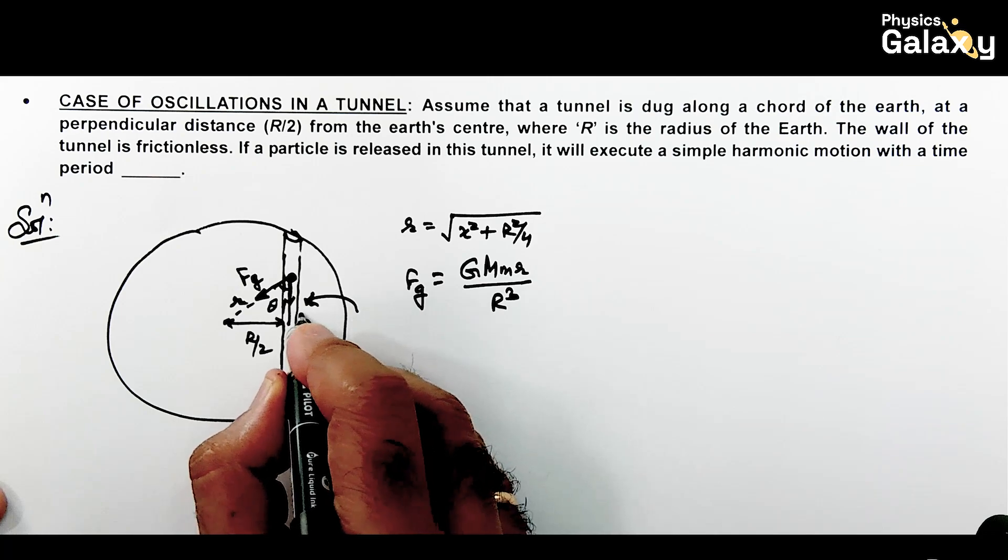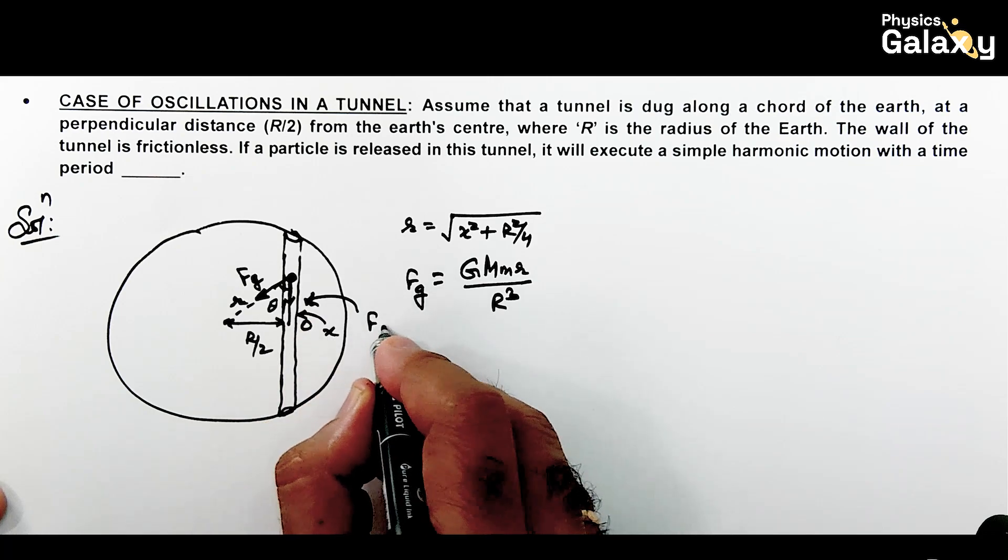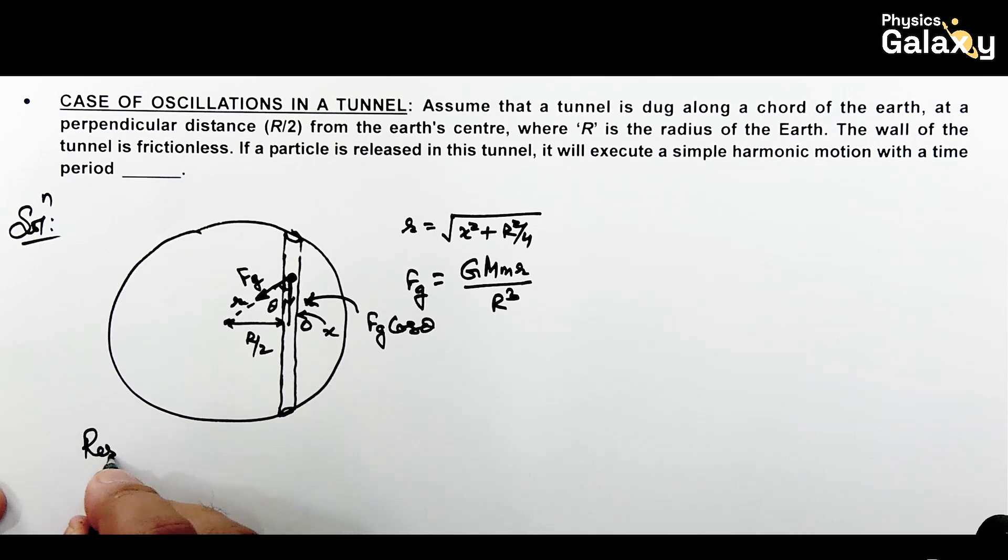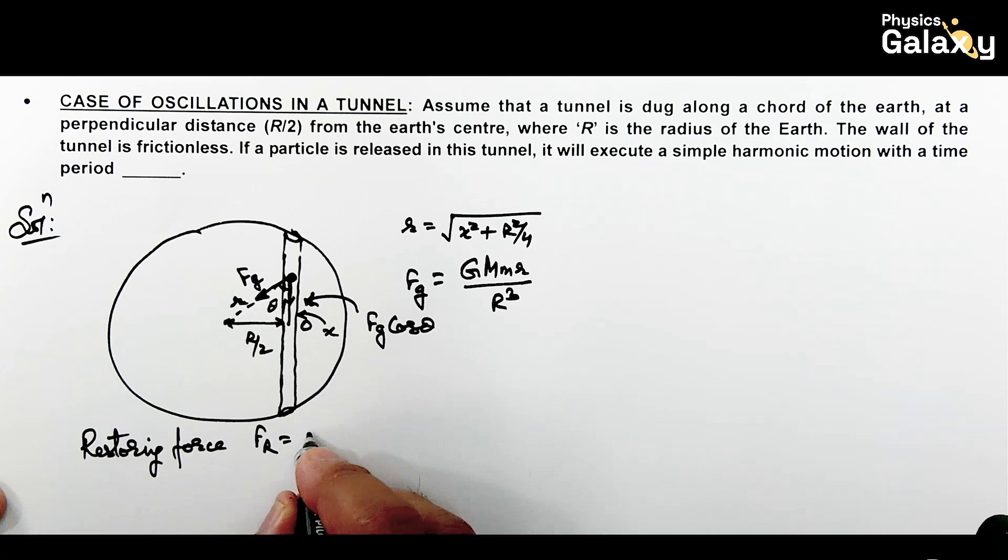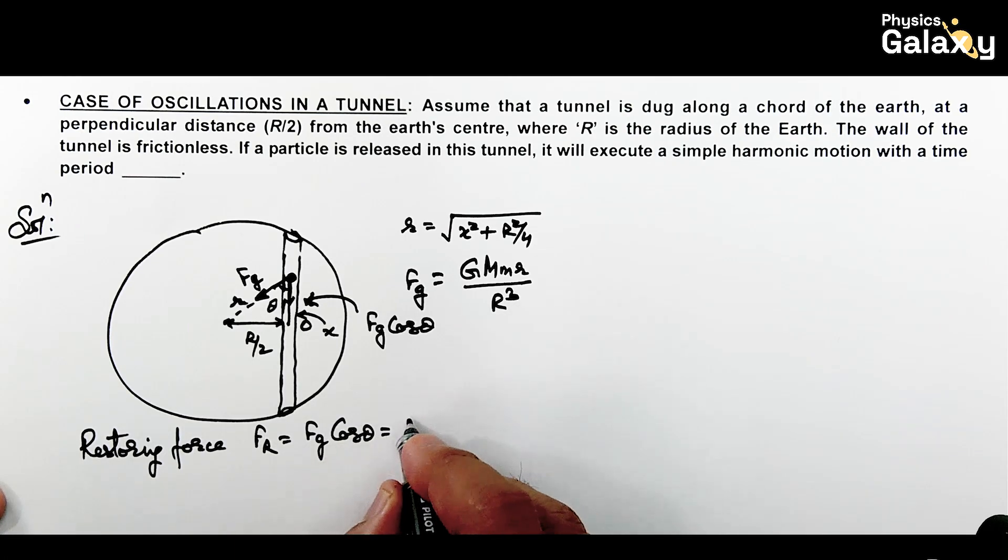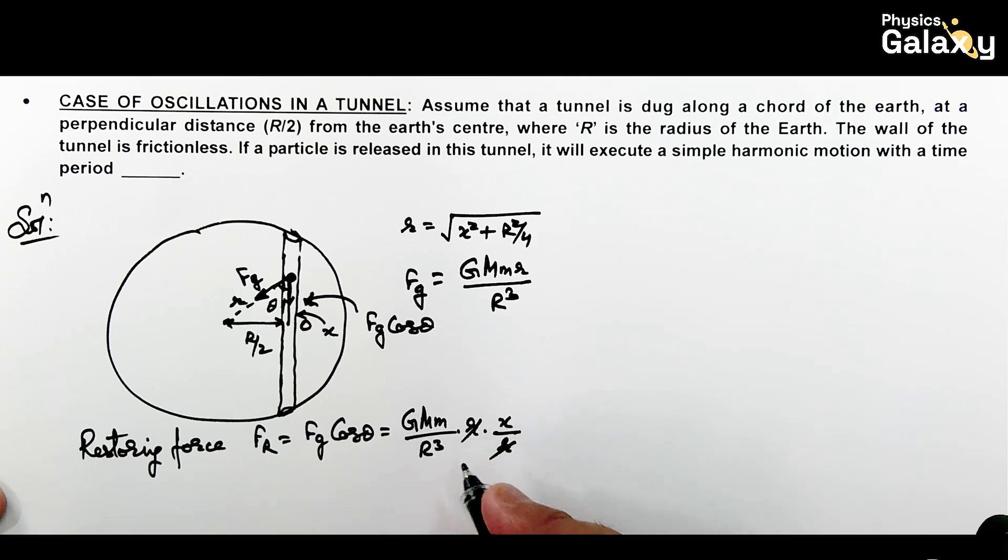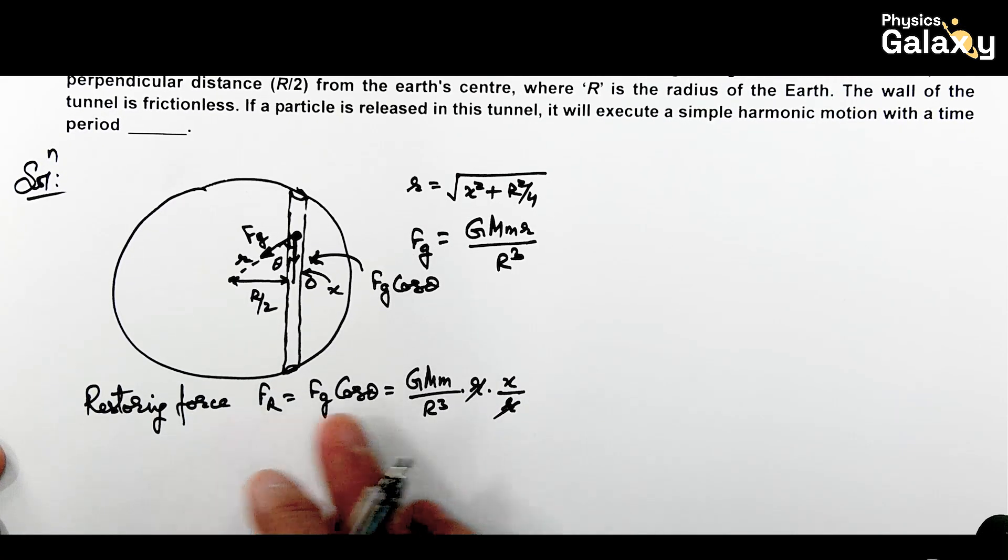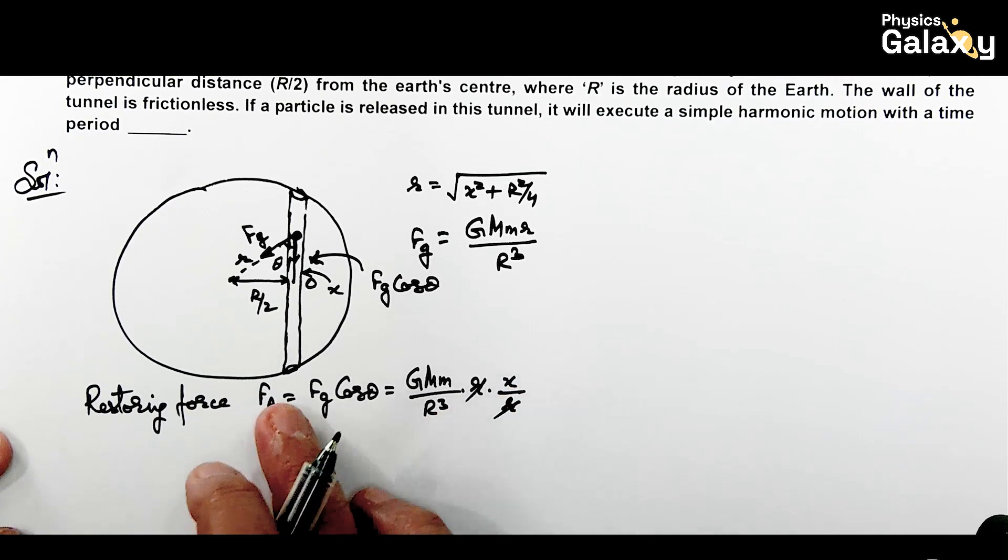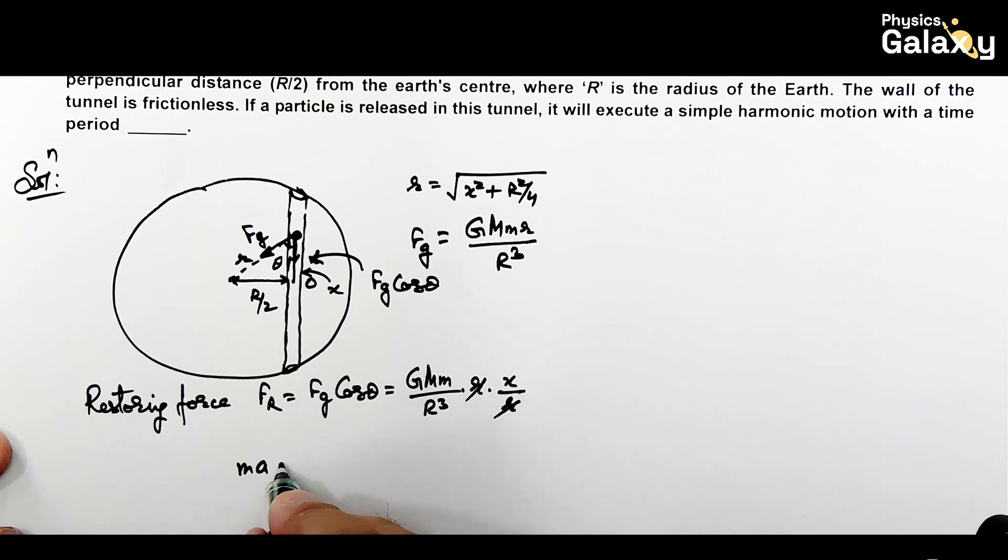Gravitational force inside at distance r is Gmmr/r³. The restoring force will be Fg cos θ, which equals Gmm/r³ × r × cos θ. Since cos θ = x/r, this r cancels out. The restoring force is proportional to x. We can write ma = -Gmm/r³ × x, so m cancels out.